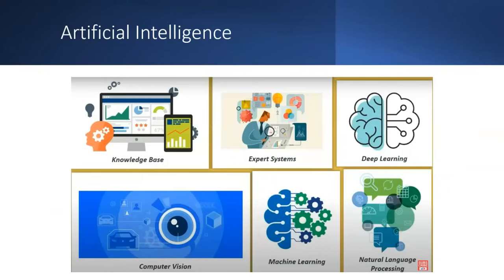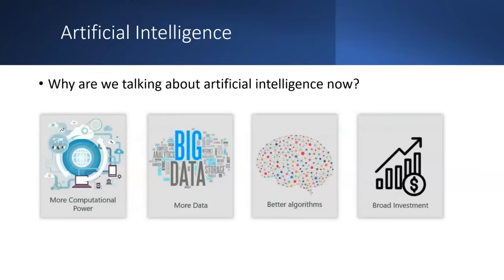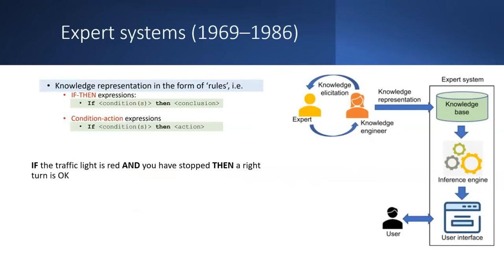AI covers knowledge-based systems, expert systems, deep learning, computer vision, machine learning, and NLP — natural language processing. We are focusing on AI now because we have more computational power than before. Previously processing was in kilobytes, but now we have gigabytes and terabytes of storage, super computing, GPUs, better algorithms, and broader investment. Expert systems, from 1969 to 1986, applied if-else conditions to get answers using an inference engine that extracts knowledge from a repository.